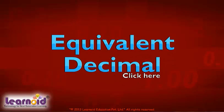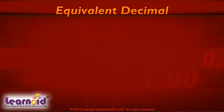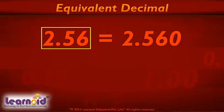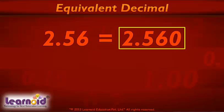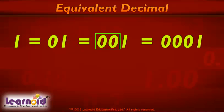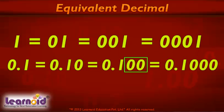Equivalent decimal numbers have the same value. For example, 2.56 is equal to 2.560. Just like adding a zero before a number does not affect its value, adding a zero after a number in decimals does not affect its value.